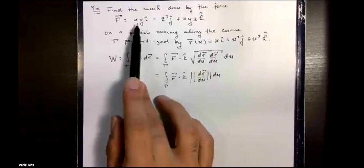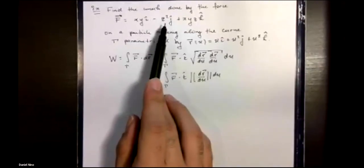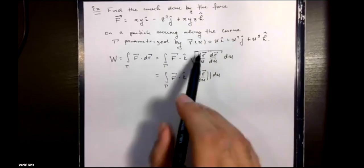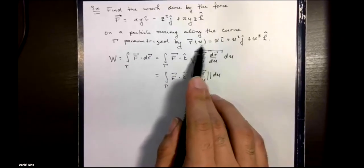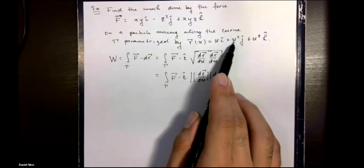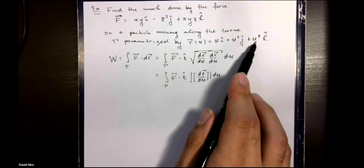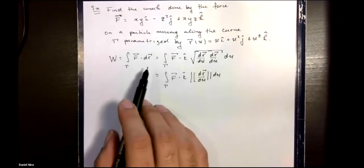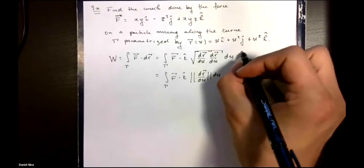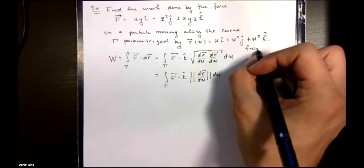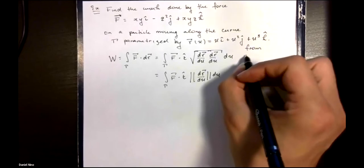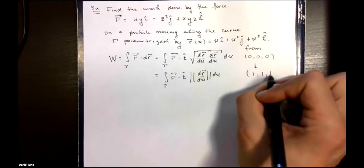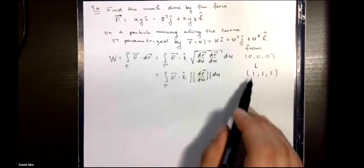In this example we have the following force and it's acting on a particle moving it along a curve parametrized by this equation, so x is equal to u, y is equal to u squared, and z is equal to u cubed, and we're interested in going from the point (0,0,0) to the point (1,1,1).